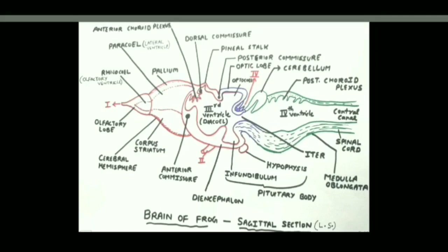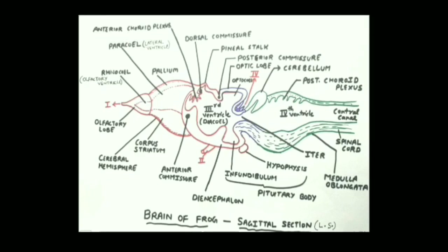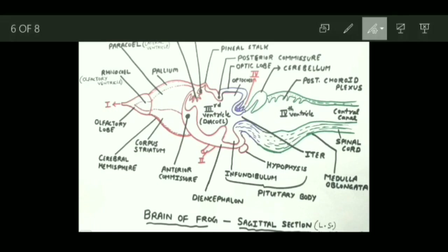The cerebrum is made up of two smooth oval cerebral hemispheres — left and right. The floor and ventrolateral sides of each hemisphere are somewhat thick; the floor is called the corpus striatum. The roof of the cerebral hemisphere is called the pallium — so corpus striatum is the floor and pallium is the roof. The cerebral hemispheres enclose a cavity called the paracoel or lateral ventricles; there are two lateral ventricles corresponding to the two hemispheres.